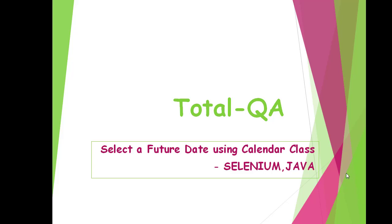Hi friends, welcome to my channel Total QA. Today we are going to focus on a new topic: how do we select a future date using the Calendar class. This example is mainly helpful from the Selenium tools perspective and also the Java API perspective.